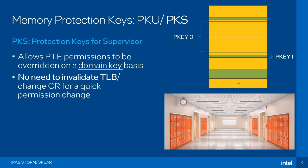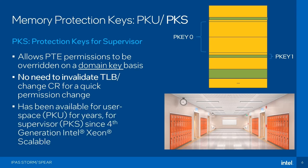The benefit of this is that you can change page table permissions — achieve something similar to KPTI or ASI — without having to change address spaces. No need to invalidate the TLB or change the CR3, which makes it a lot faster than fully switching address spaces. PKU, protection keys for user mode, has been available for a few generations, and protection keys for supervisor has recently been released on fourth generation Intel Xeon scalable processors.